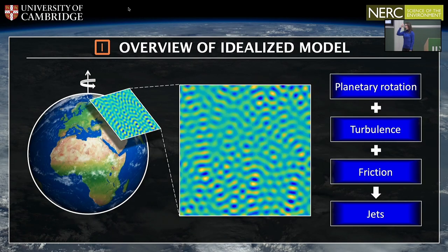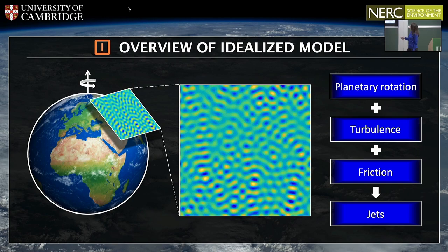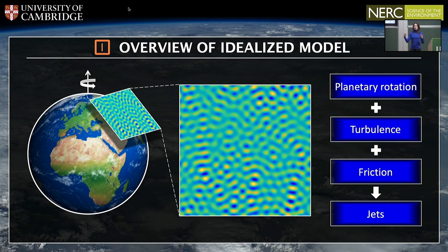The model that forms the basis of the entire talk can be summarised as follows. We incorporate the effects of planetary rotation via the beta-plane tangent-plane approximation with doubly periodic boundary conditions. We incorporate the effects of turbulence via a small-scale stochastic force. And because we're continuously injecting energy into the system via the stochastic force, we use friction as a way to dissipate energy so that the system can reach an equilibrium energy level. These are the three ingredients required for the spontaneous formation and equilibration of jets within this model.